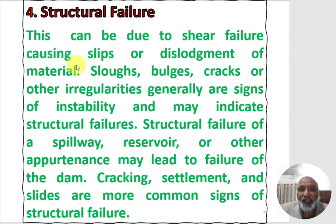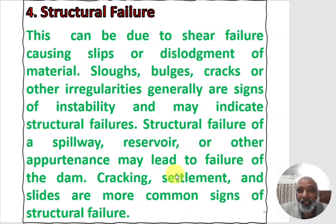The next reason is structural failures. These can be due to shear failure causing slips or dislodgement of materials, sloughs, bulges, cracks, or other irregularities. Such irregularities are generally signs of instability and may indicate structural failures. Structural failure of a spillway, reservoir, or other components may lead to failure of the dam. Cracking, settlement, and slides are the most common signs of structural failures.